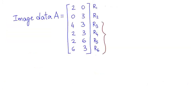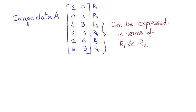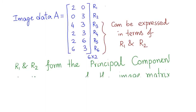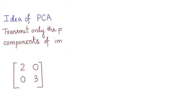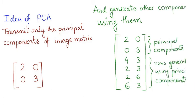Now consider an image matrix. Here rows 3 to 6 can be expressed in terms of rows 1 and 2 which form the principal components of this image matrix. The idea of PCA is that transmit only the principal components and generate the other components using them.